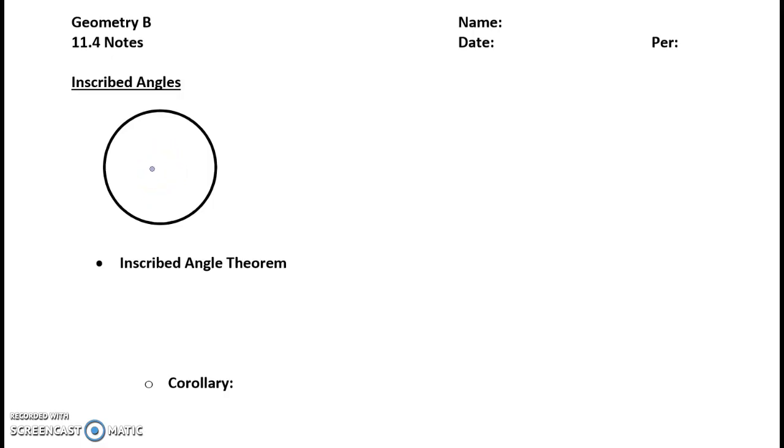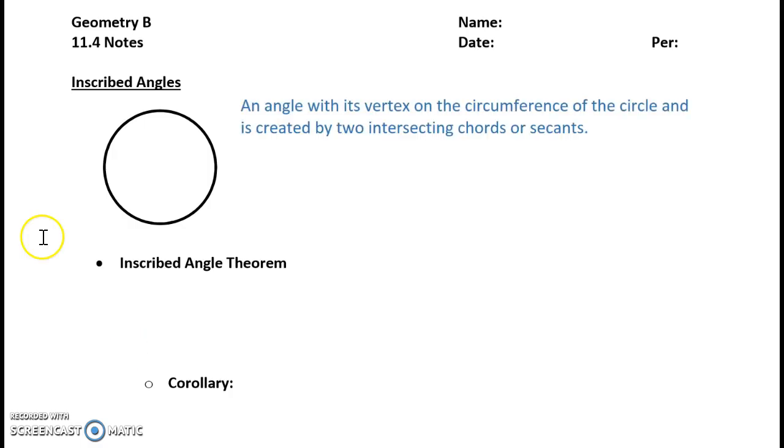Now, these inscribed angles are different. They're going to have their vertex on the circumference of the circle, and they're created by two intersecting chords or secants. So let's go ahead and jot down that definition. An angle with its vertex on the circumference of the circle, which is different from that central angle because we're going all the way to the circumference, pulling it back, and then created by two intersecting chords or secants.